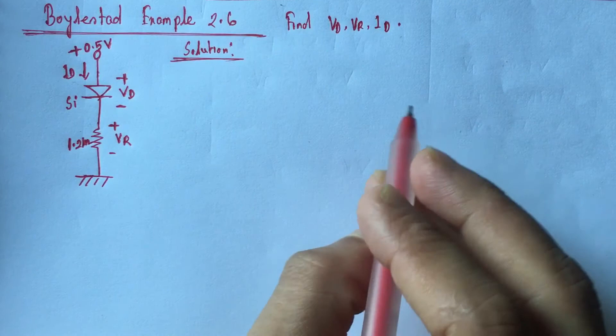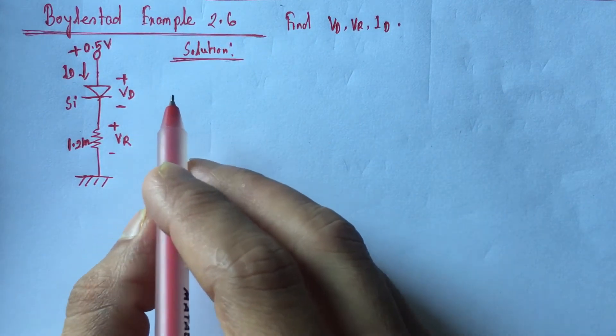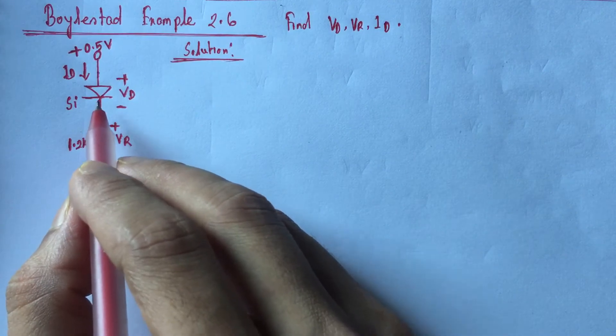For solving diode-related problems, at first we have to identify the state of the diode—either the diode is on or off.